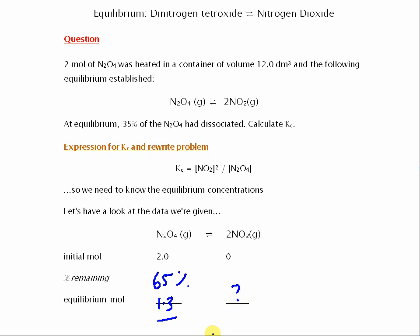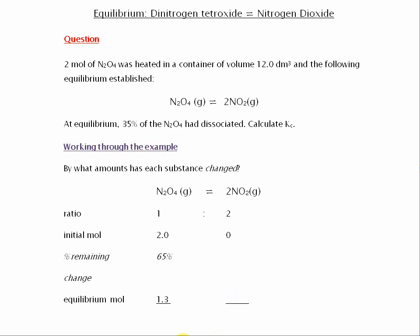And next thing we need to find is the amount of NO2. Now, to work out the amount of NO2, we need to think by what amounts has each substance changed. So for the N2O4, it went from 2 to 1.3.